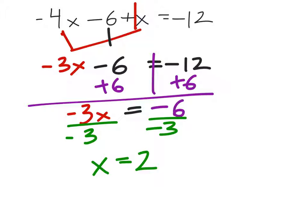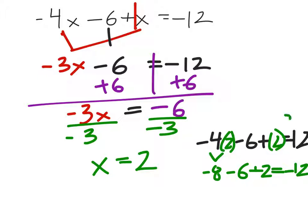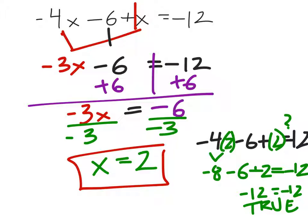This shows a lot of work — that's worth at least a 3. For full credit, you need to show your original equation: negative 4x minus 6 plus x equals negative 12. Substitute x equals 2: negative 4 times 2 is negative 8, minus 6 plus 2 equals negative 12. That's true, so the answer is confirmed correct and you can earn a 4.